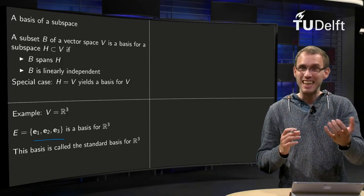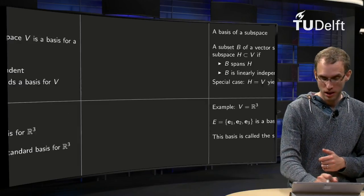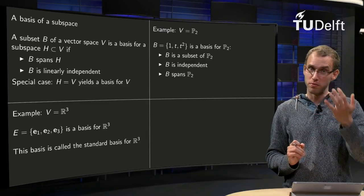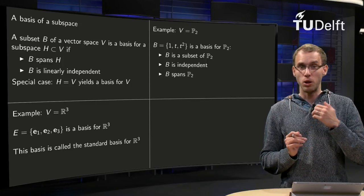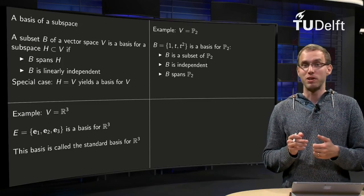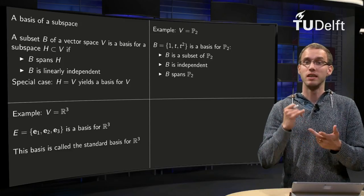Now let's extend this idea of a basis to other vector spaces. For example, let's look at P₂. Can we find a basis for V? So, what can we take? We could take the easiest polynomials we can think of: 1, t, and t². This set forms a basis for P₂.